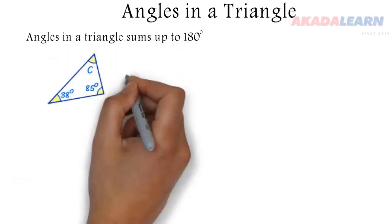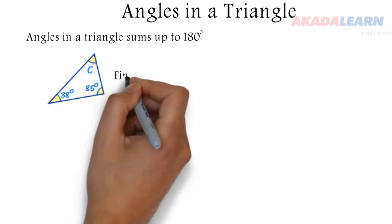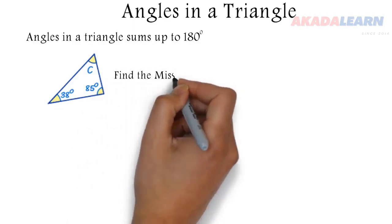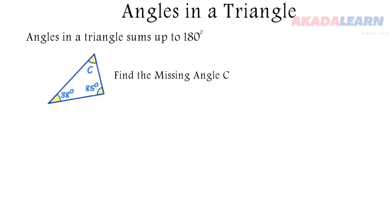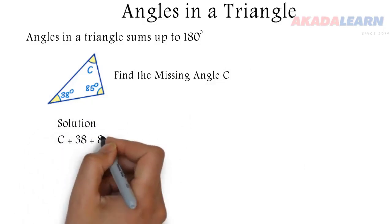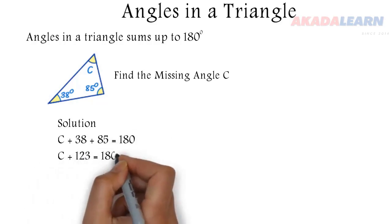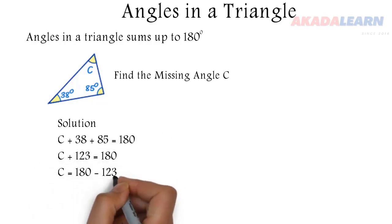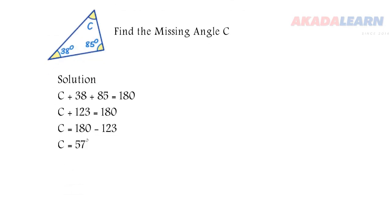So let's say we have a triangle right there — we want to find the value of angle C. What we need to do is add up the three angles and equate it to 180. So 38 plus 55 is 93. We subtract 93 from both sides. Our angle C is 57 degrees. That's the degree symbol there.